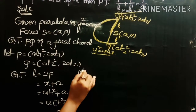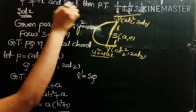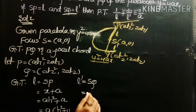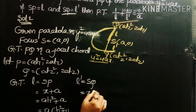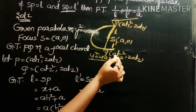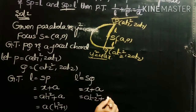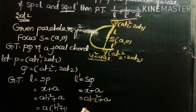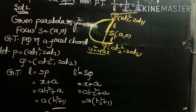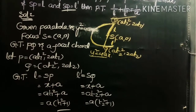The focal distance formula is x + a. For point P, x-coordinate is aT1², so L = aT1² + a = a(T1² + 1). Similarly, L' = SQ, the focal distance of Q. Using x + a with x = aT2², we get L' = aT2² + a = a(T2² + 1). Now substituting these two values into the left-hand side of the result to get the required answer.